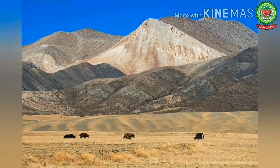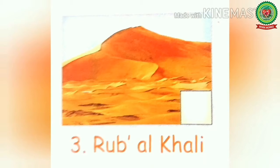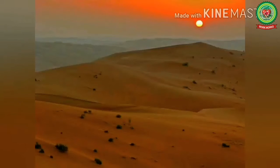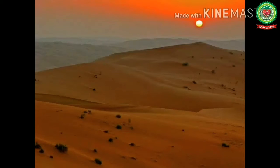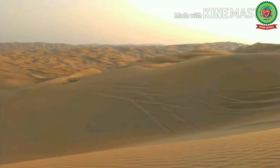The Tibetan Plateau is home to the world's tallest mountain range, that is the Himalayas. Next is Rub al-Khali. It has vast reserves of oil and natural gas beneath its sands. This desert is also known as the Empty Quarter because of its inhospitable environment.